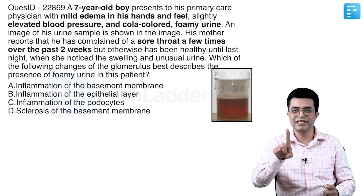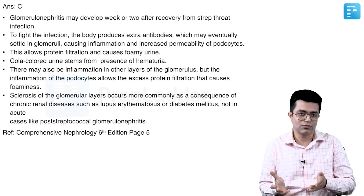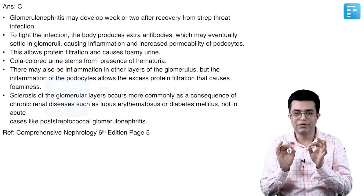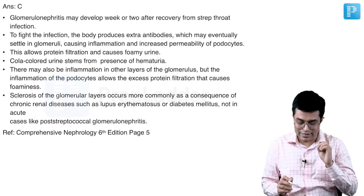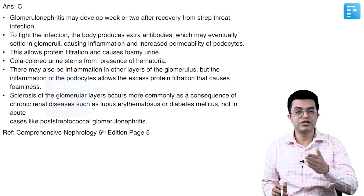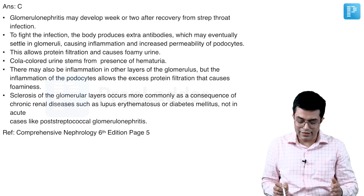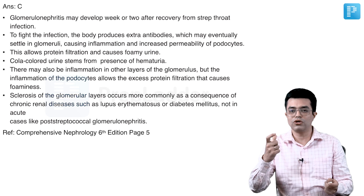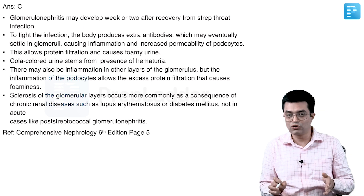When you attempt this question, these keywords will guide you. The answer is option C. Looking at the explanation, all the key points are covered concisely. One of the other options related to sclerosis — which occurs in conditions like lupus erythematosus or diabetes mellitus — is seen in chronic renal diseases, not in acute post-streptococcal nephritis. You can also gain additional points from the explanation for future MCQs. Standard textbook references are mentioned, and if you click on the treasure link, it takes you directly to all key points related to post-streptococcal nephritis.